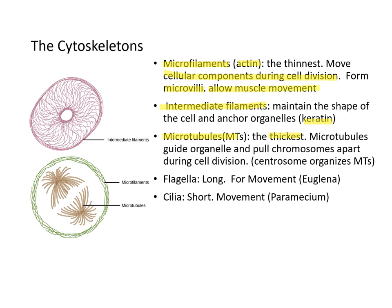Intermediate filaments maintain the shape of the cell and anchor the organelles inside. Microtubules are the spindle fibers seen during cell division — they are the thickest and guide and pull chromosomes apart during cell division. The centrosome organizes the microtubules. Flagella and cilia are also made up of cytoskeleton components. Flagella are long and used for movement in organisms like Euglena. Cilia are shorter but also used for movement, found in organisms like Paramecium.